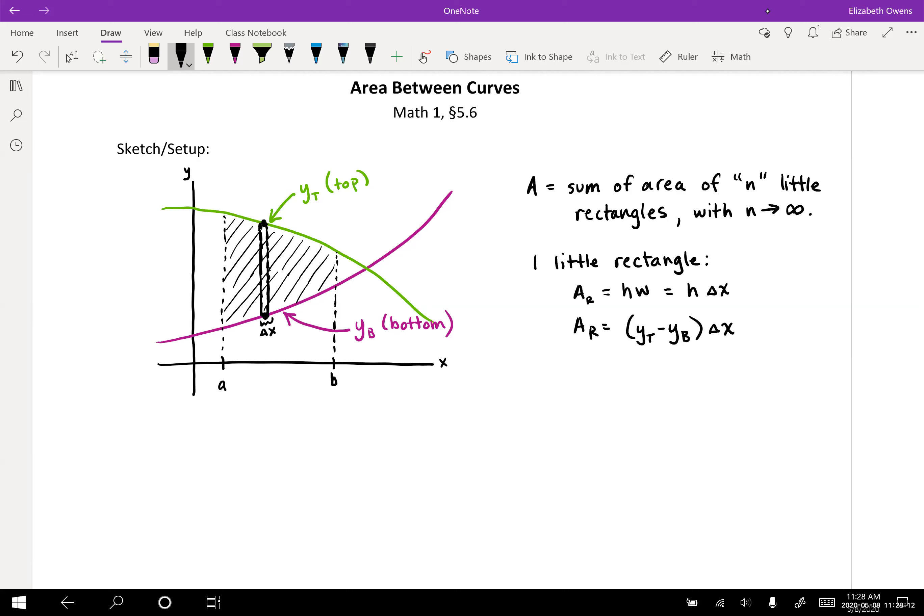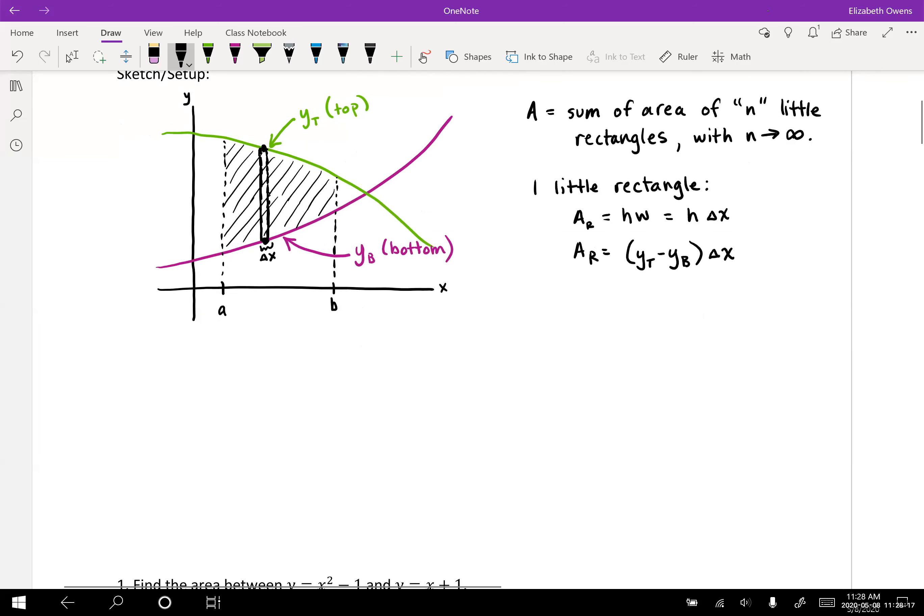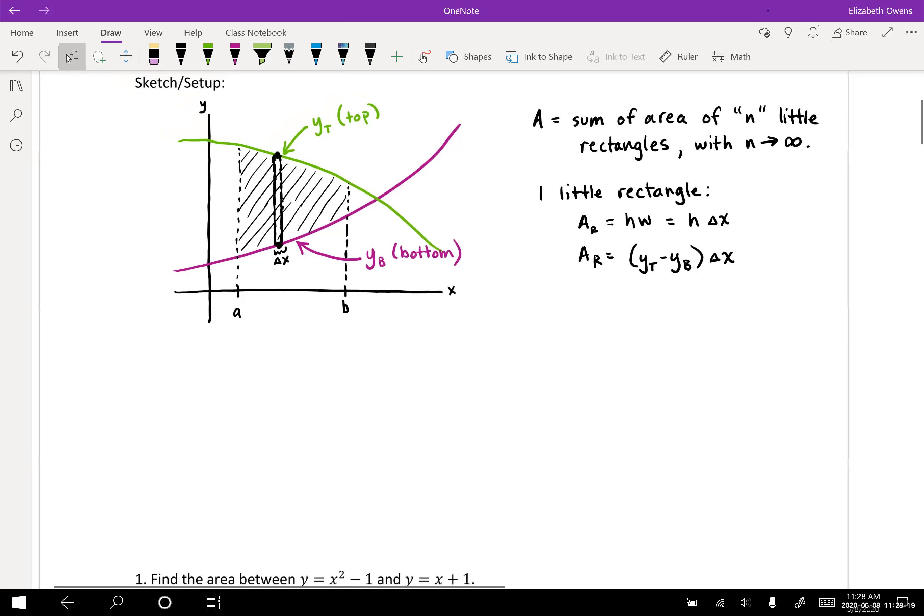So we're just going to keep it very generic like that. yt minus yb times delta x. So there's our height times our width. So that's just for one little rectangle there. And so for our full area, we're going to add up an infinite number of those little rectangles.